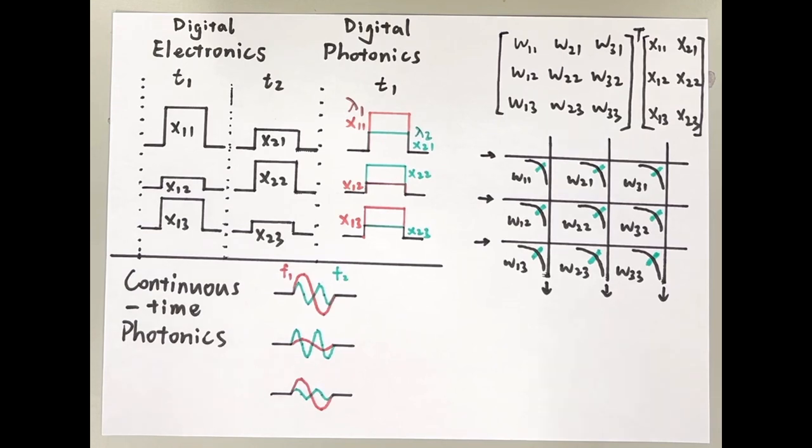Now assume we are dealing with this matrix-vector multiplication. First, let's look at the conventional ways of solving this.